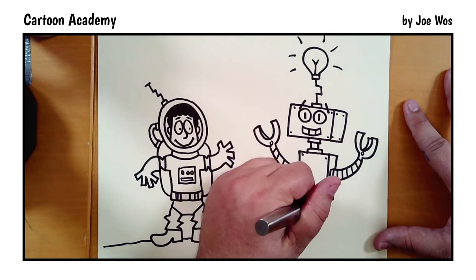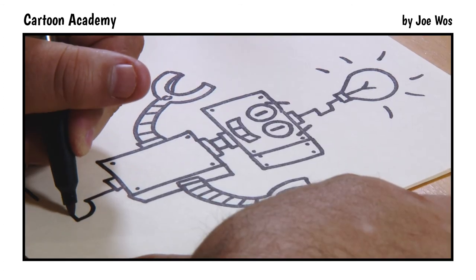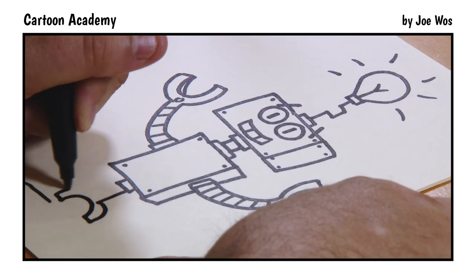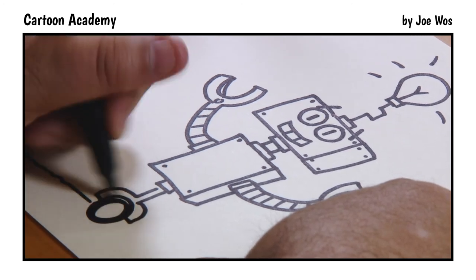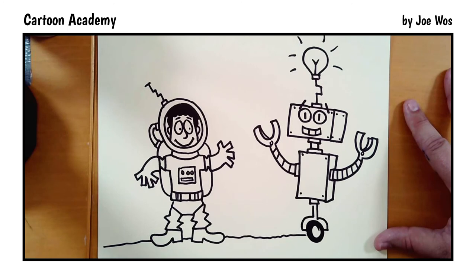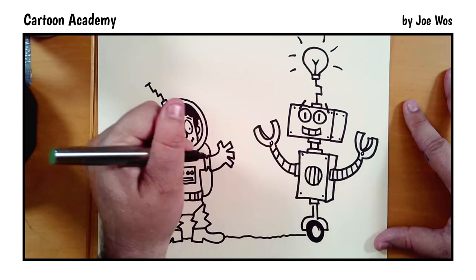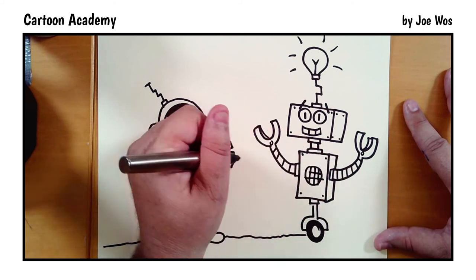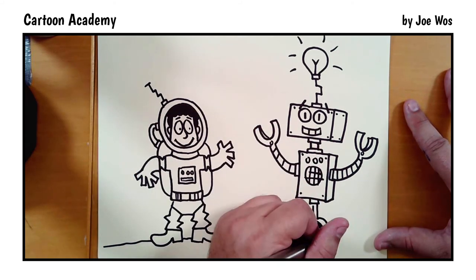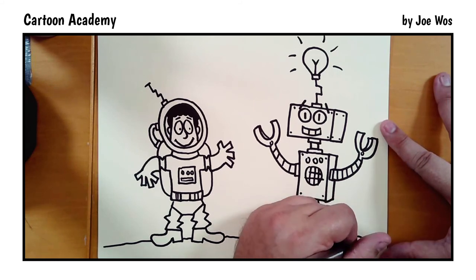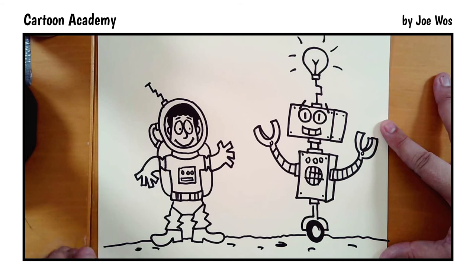For the legs, we're actually just going to give them a wheel. So we draw a little rectangle. Down, around, over, and back up and add the wheel. On the chest plate, we've got a speaker. Oh, and a couple little lights. Finish by adding our lunar surface with a few craters and some texture. And in the background, we don't see the moon because they're on the moon. We see the planet Earth.